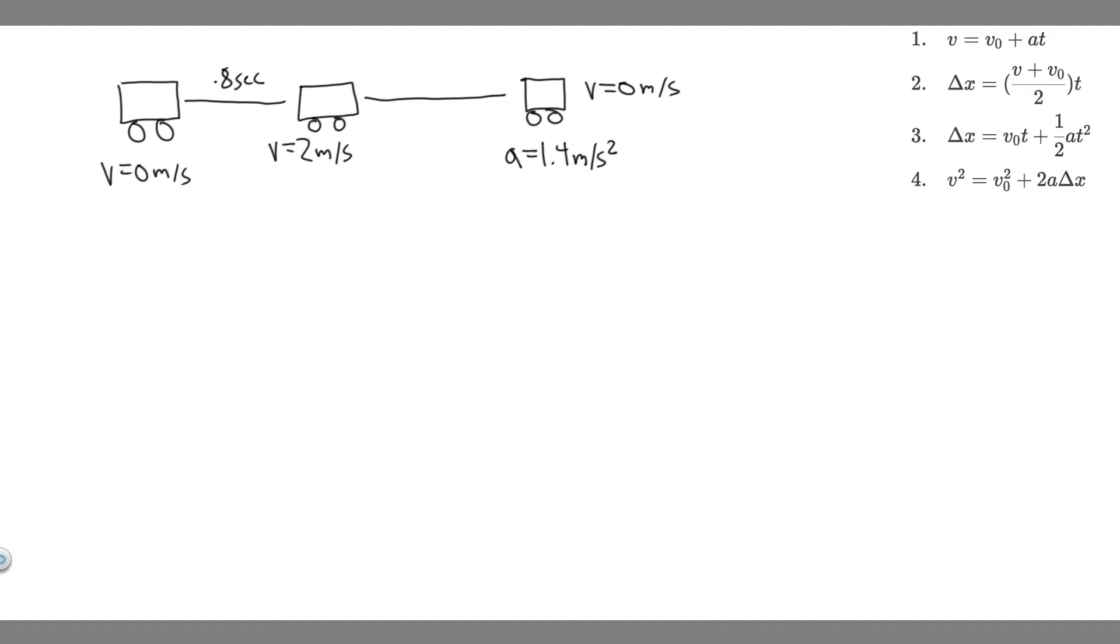So the first thing you always want to do is draw what's going on. Imagine this is her car in the beginning. She's at zero, and then she's going to back up, and she's going to accelerate at 1.4 meters per second squared. And then at some point, she's going to reach 2 meters per second.